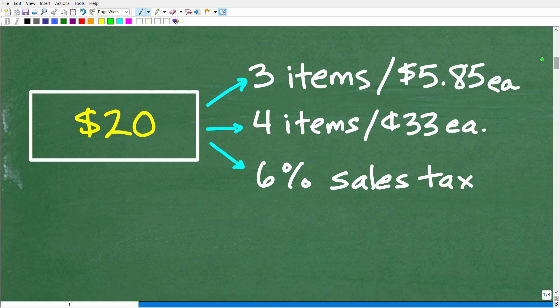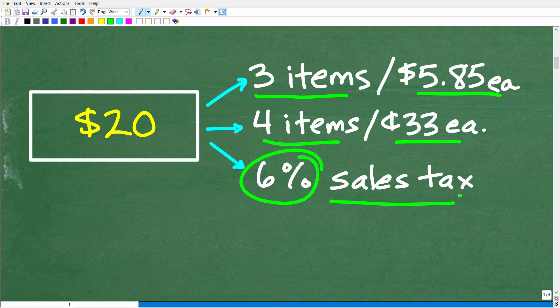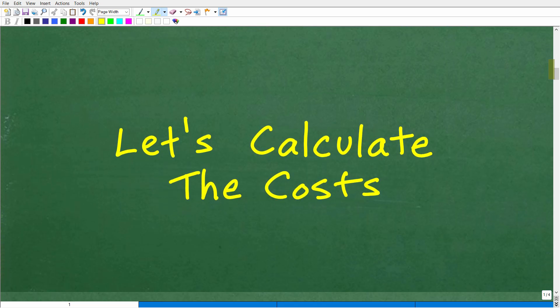Okay, so here it is. We have $20 and we want to purchase three items at this cost, four items at this cost. And then we need to account for this sales tax. So probably most of you could be like, oh, yeah, three items at this cost. The total right here, the subtotal would be three times $5.85. Right here, four items times $0.33. We could just calculate how much this is going to be. Then we need to think about this sales tax, right? So what we need to do here is obviously we're going to have to calculate the cost.